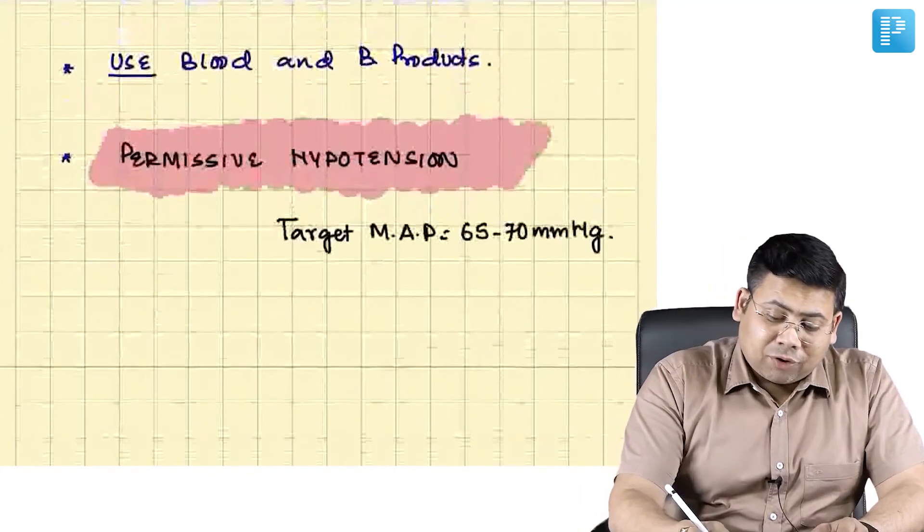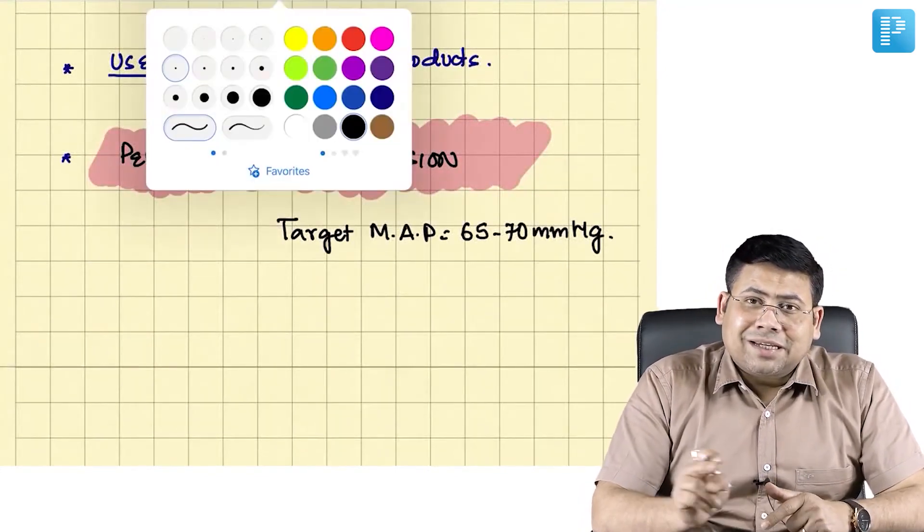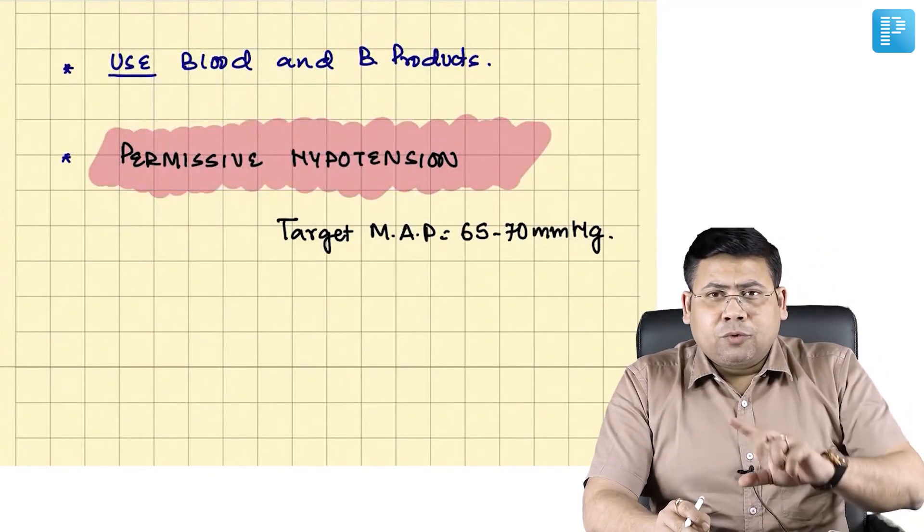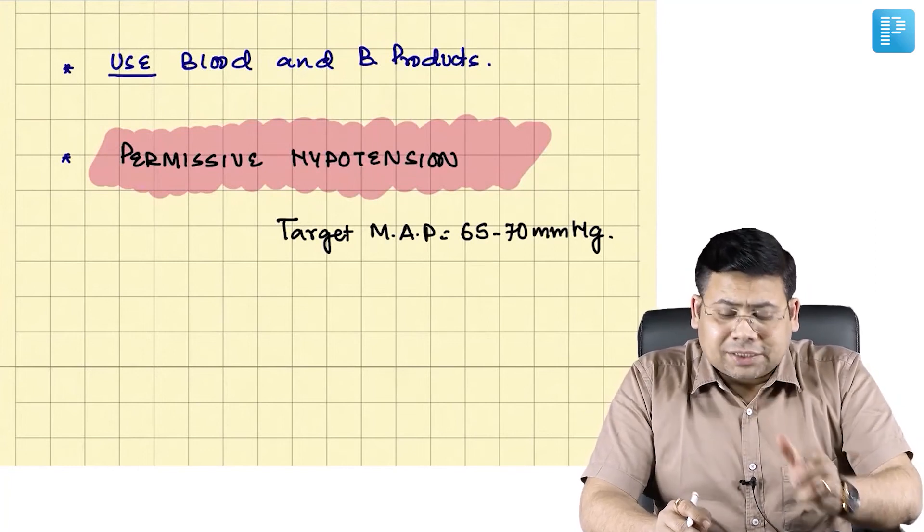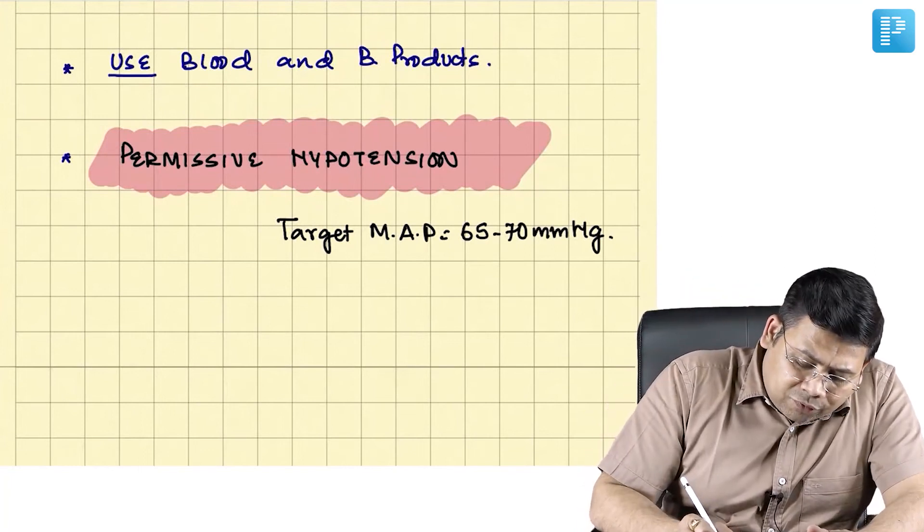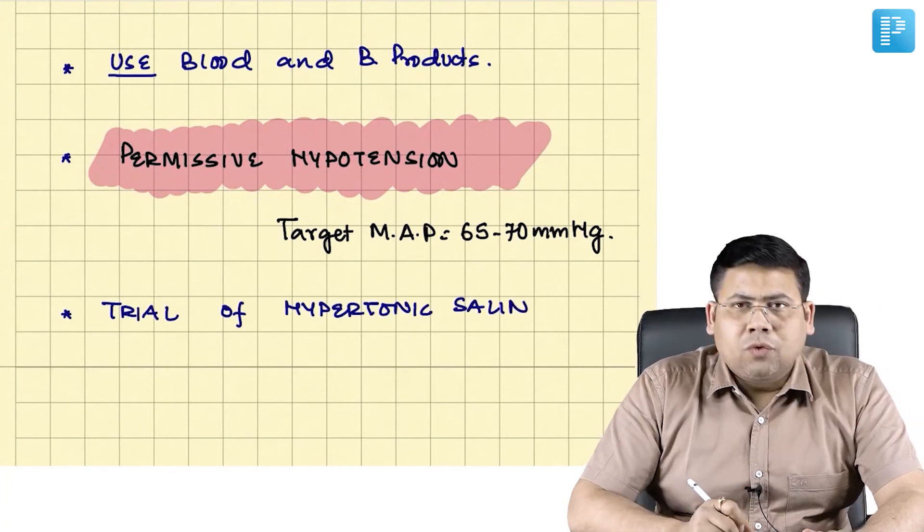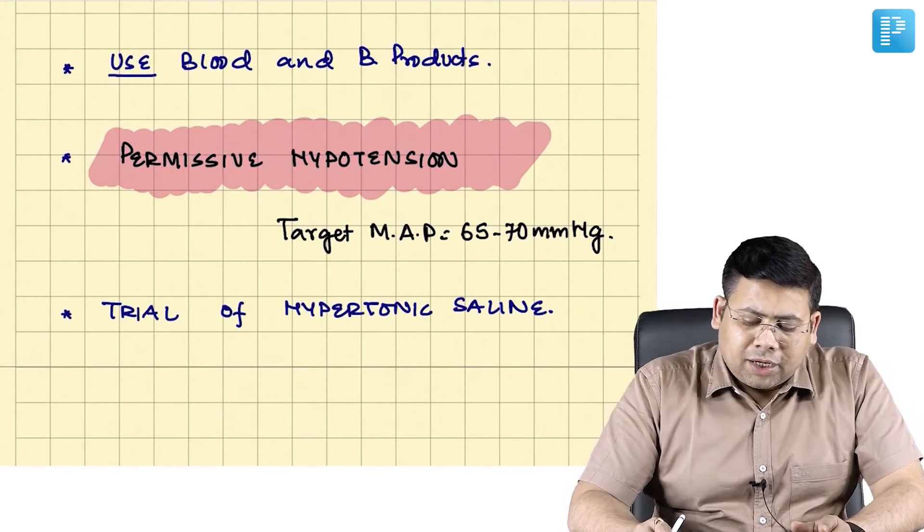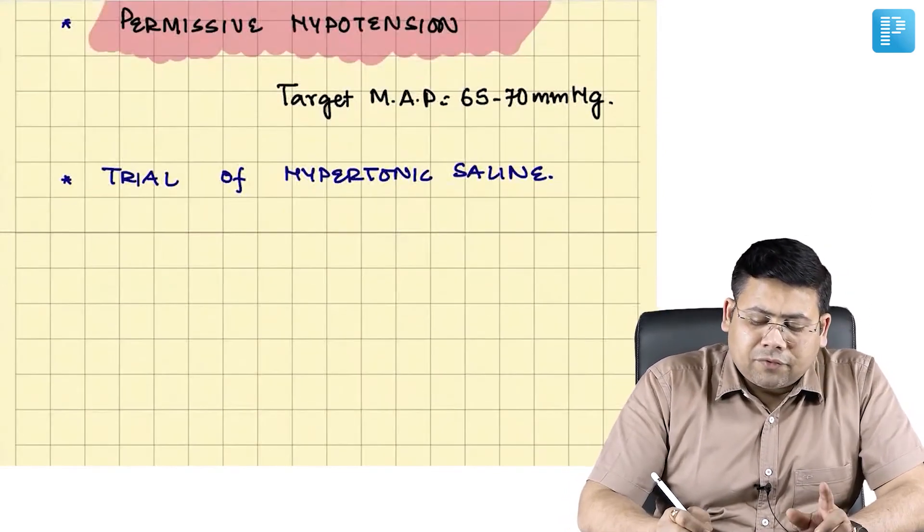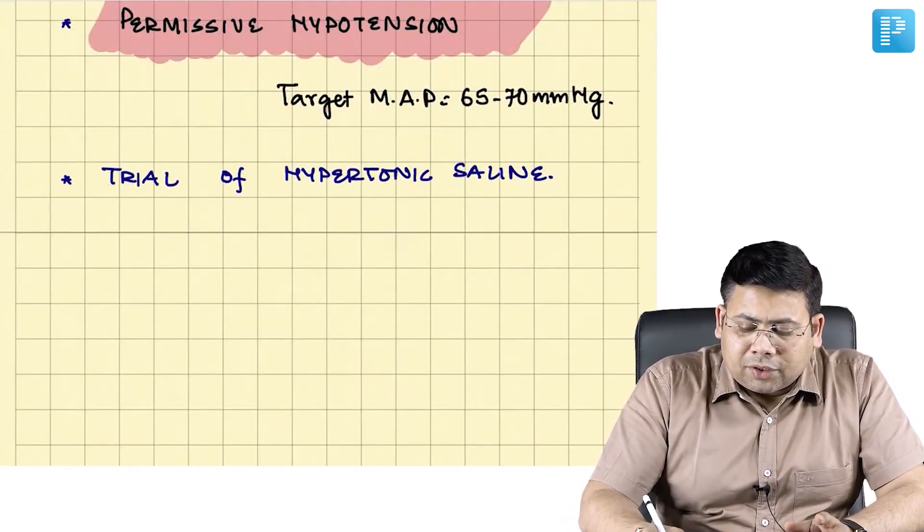A very important thing is, rather than using 6 liters of normal saline, use 3 normal. That means hypertonic saline. So always go for a trial of hypertonic saline. This point is again very important.